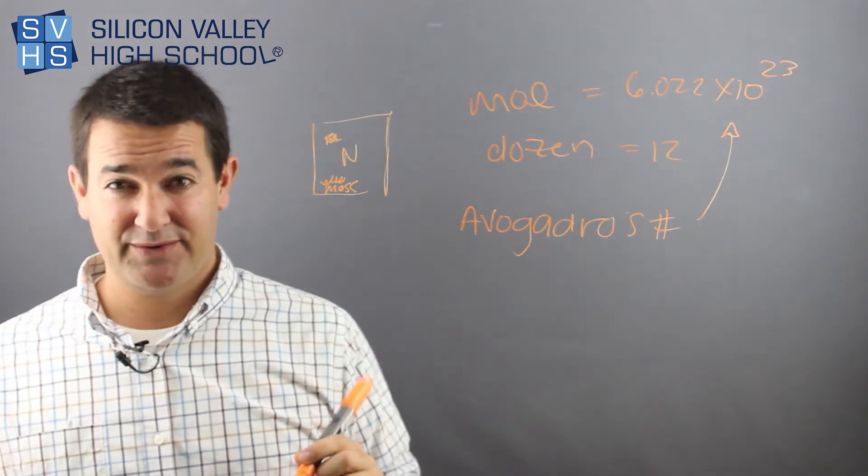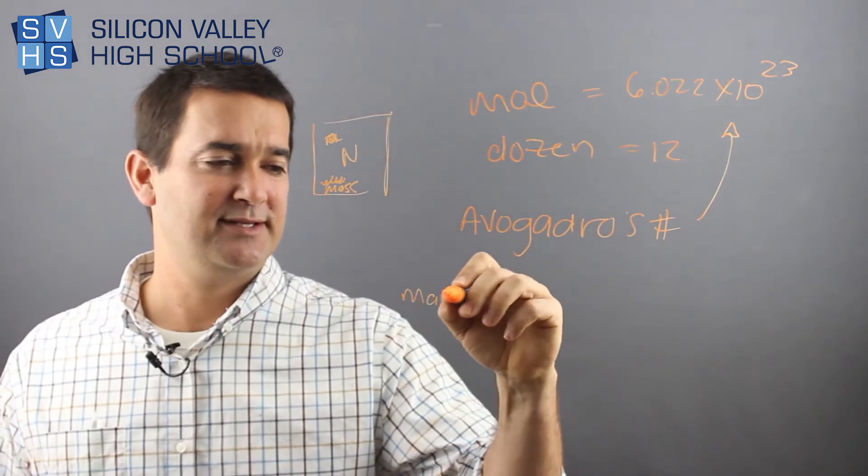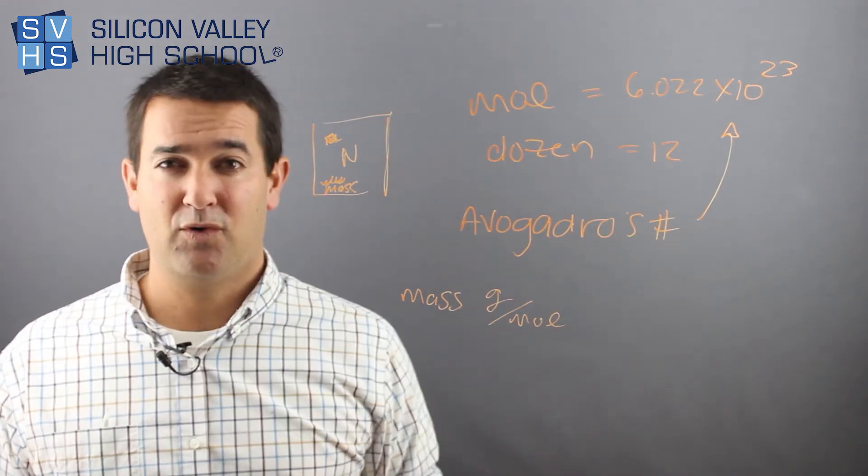And by the way, what's also annoying is that can be flipped depending on the periodic table. But the mass number is always a number of grams per this number, per mole.